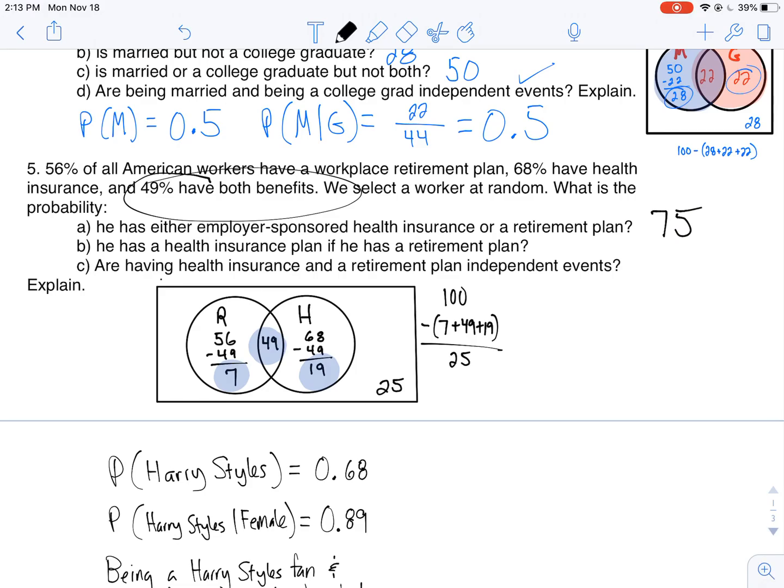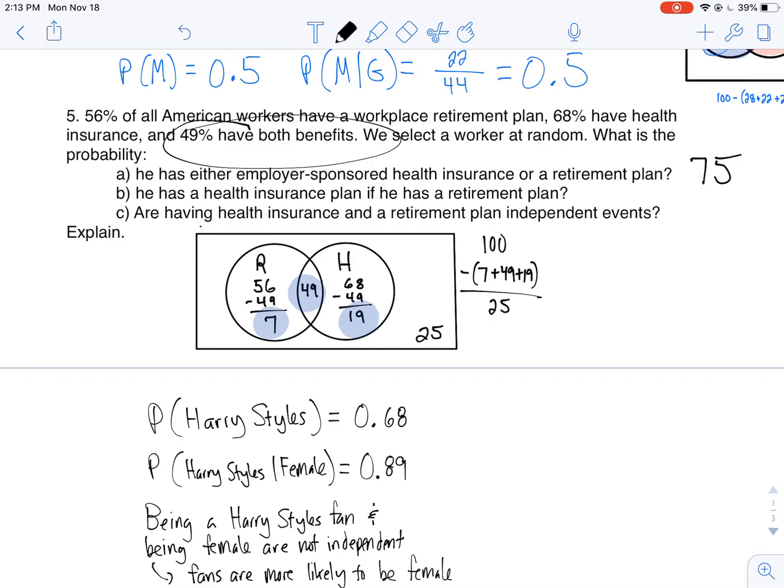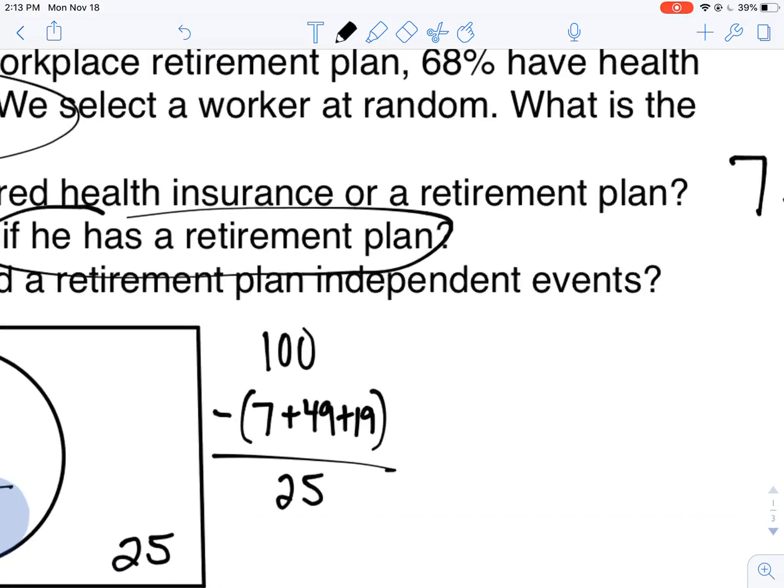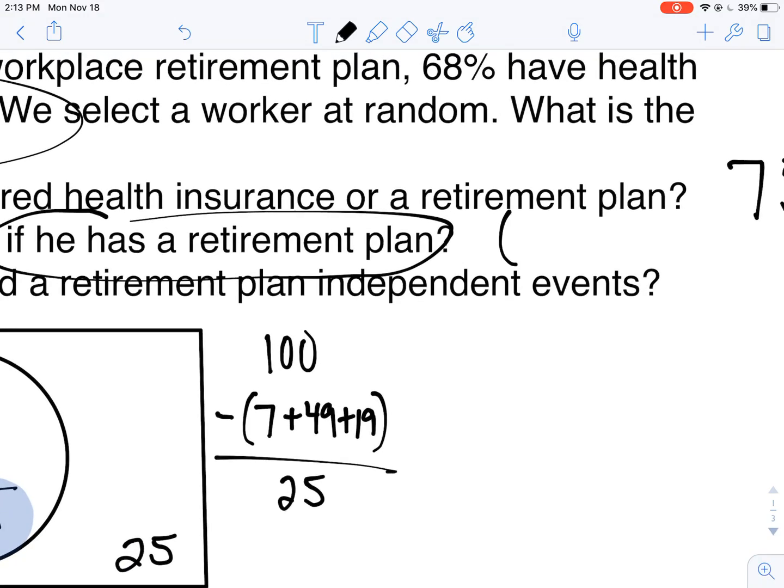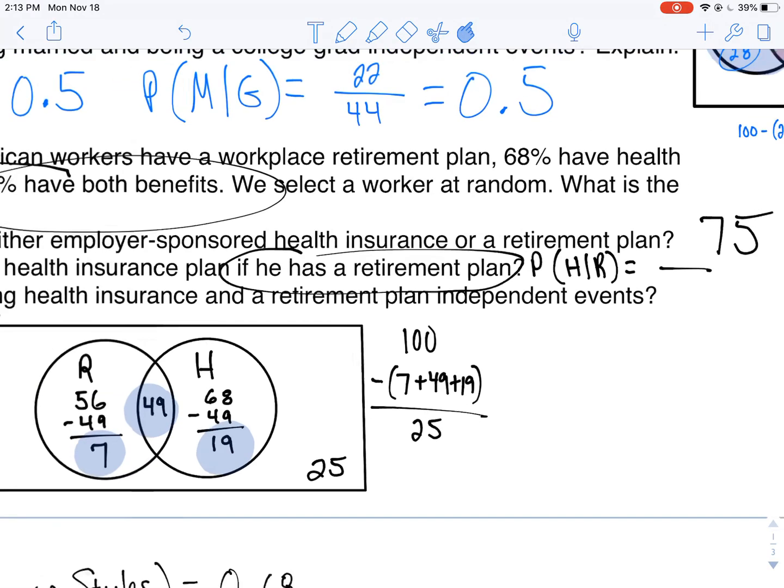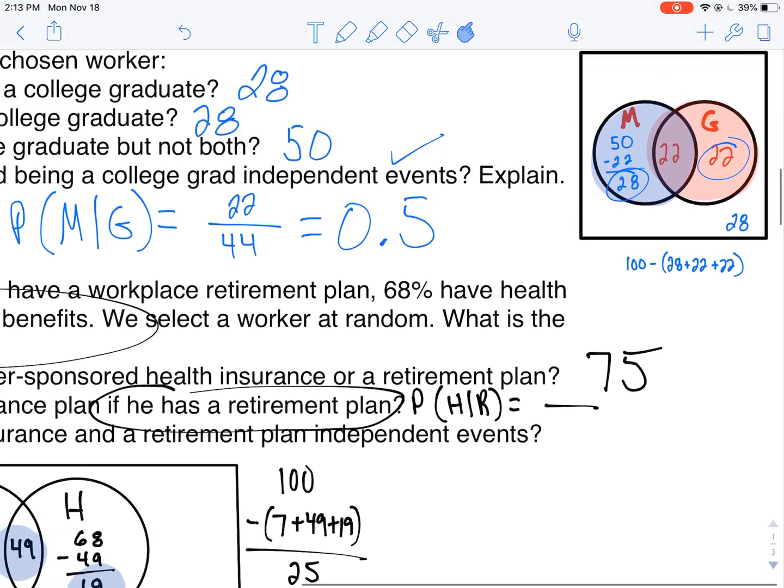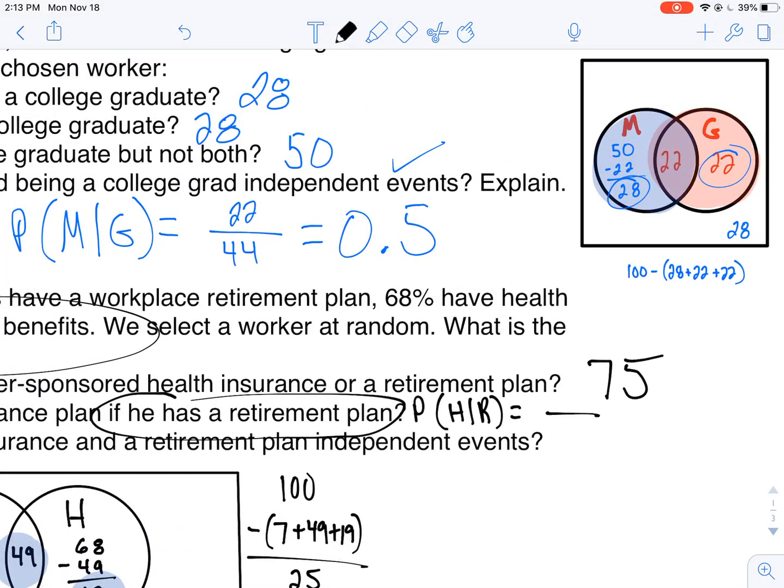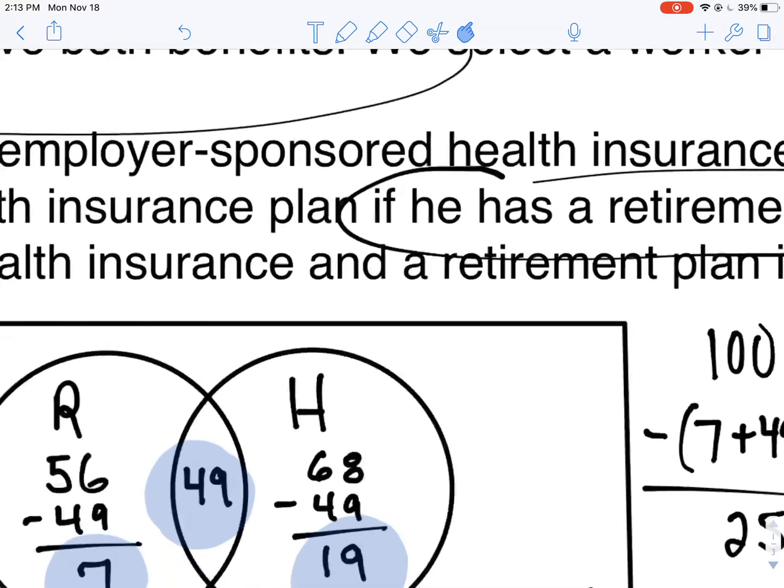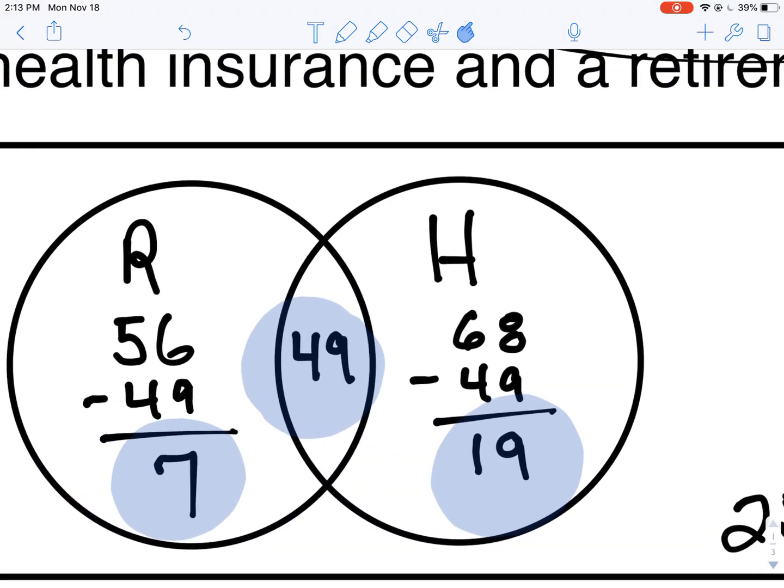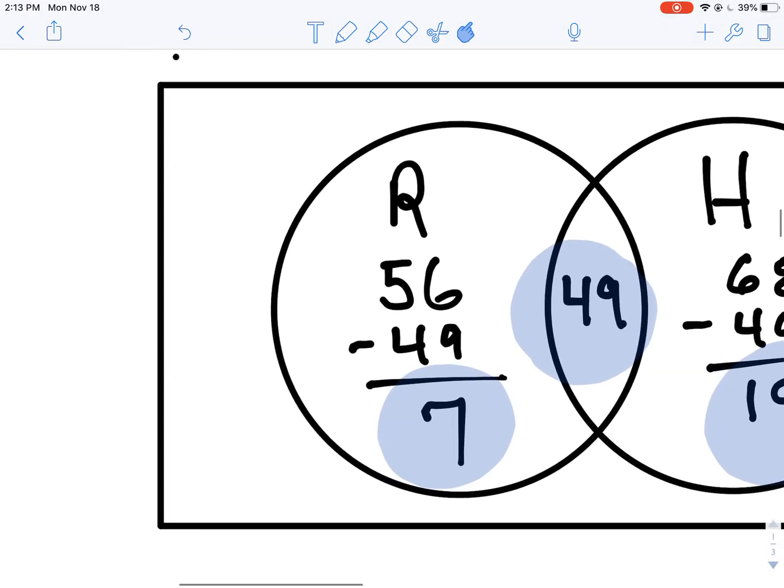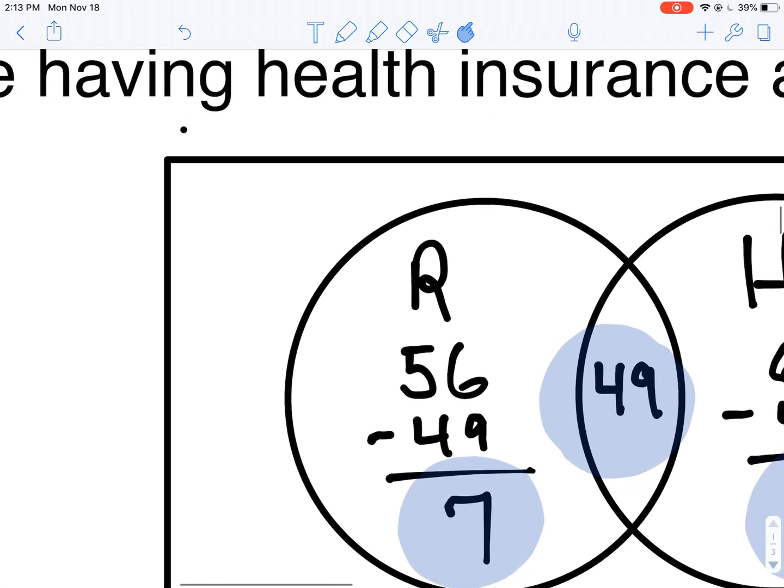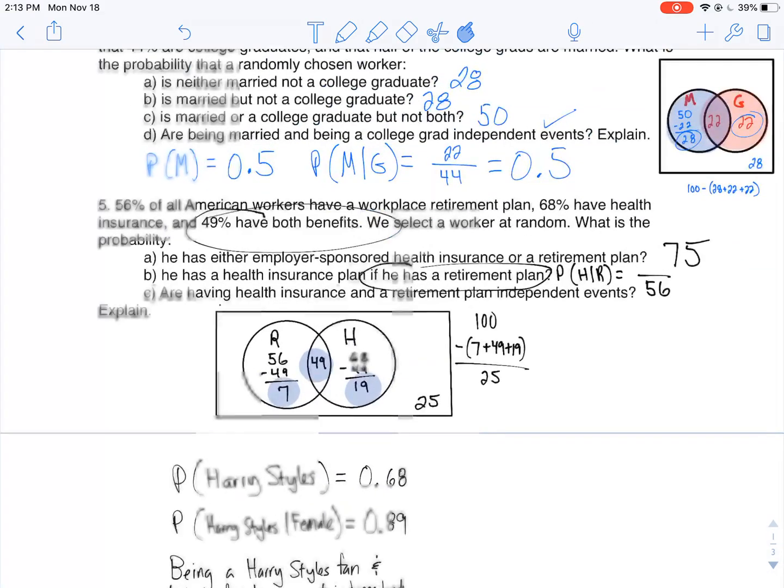He has health insurance if he has a retirement plan. So in that case, that if is my given. That means given he has a retirement plan, the probability that he has health insurance given he has a retirement plan. Those who have a retirement plan is gonna be 56. Out of that 56%, how many of them have health insurance? I'm looking at the 56 year of retirement, 49 have health insurance.